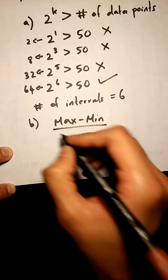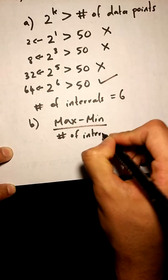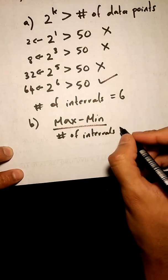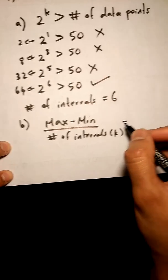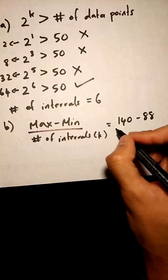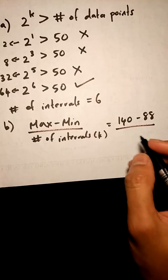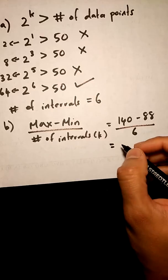In this case, our max is 140, our min is 88, and our number of intervals is 6. That is equal to...